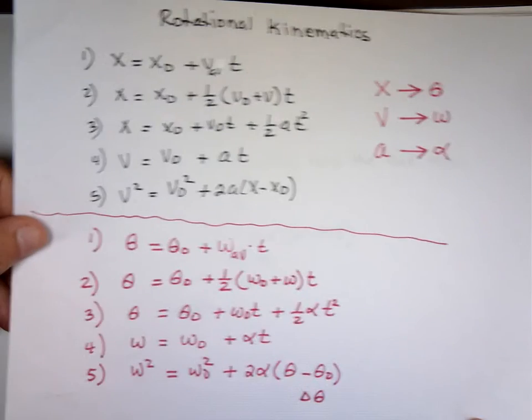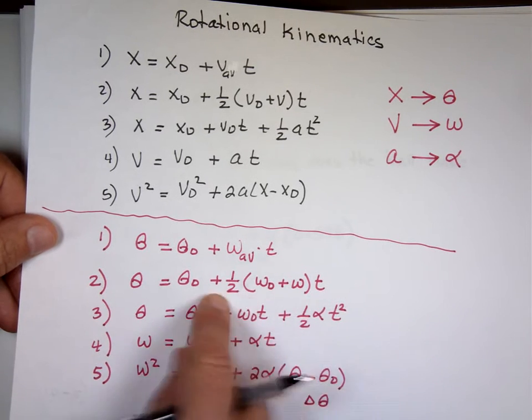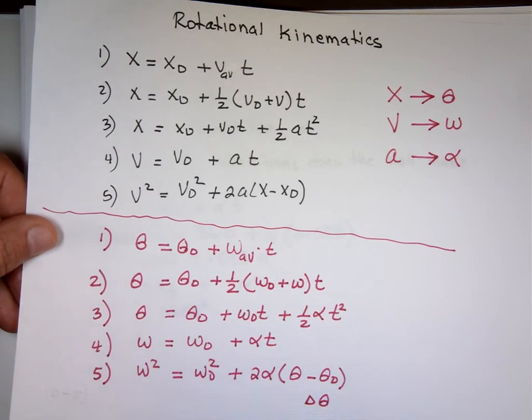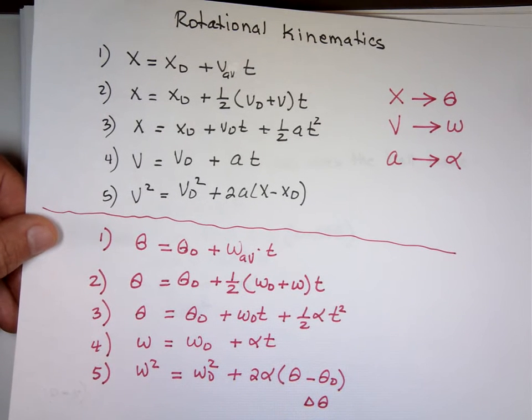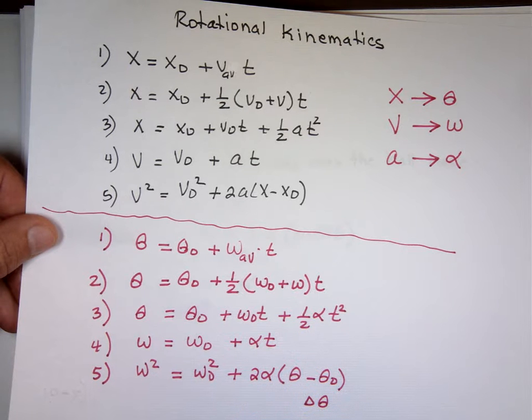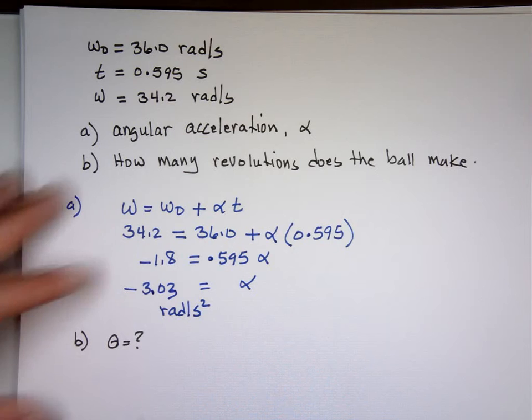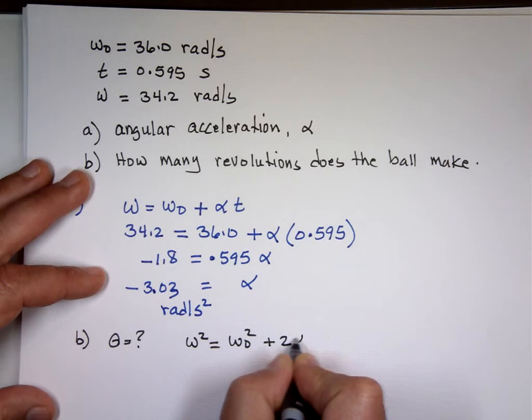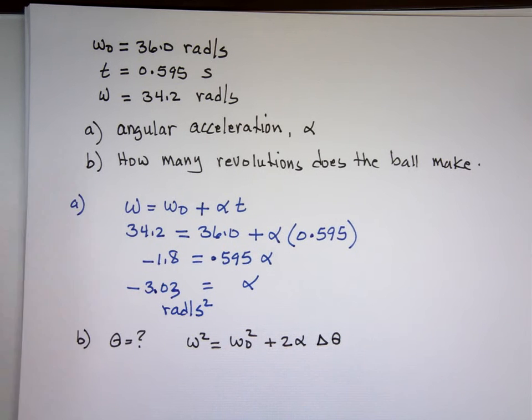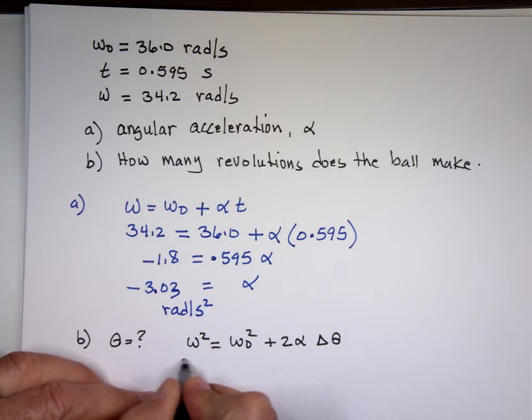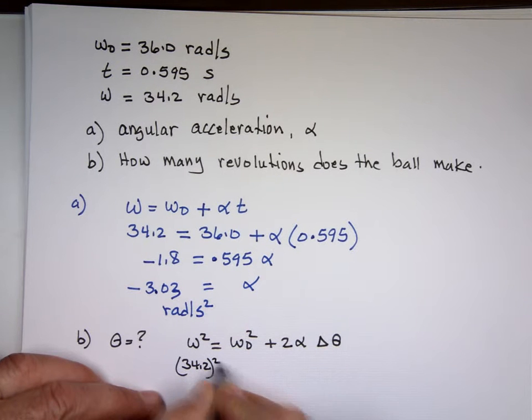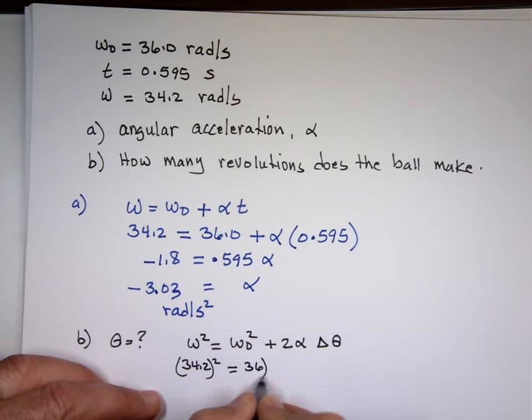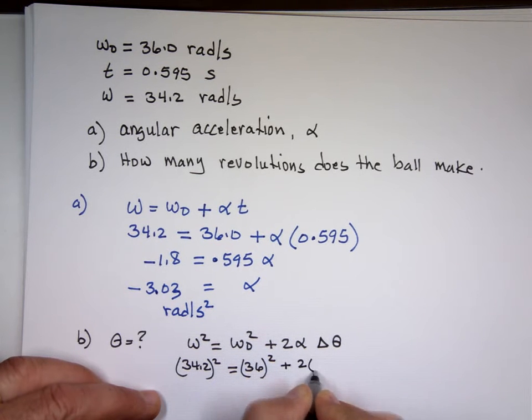You can do that if you want to. I can do number 5, too. So whatever you like to do. So if I take number 5, I go w squared equals w 0 squared plus 2 alpha times the change in theta. w 0 squared, which is 34.2 squared, equals 36 squared plus 2 times alpha, alpha is negative 3.03, times the change in theta.